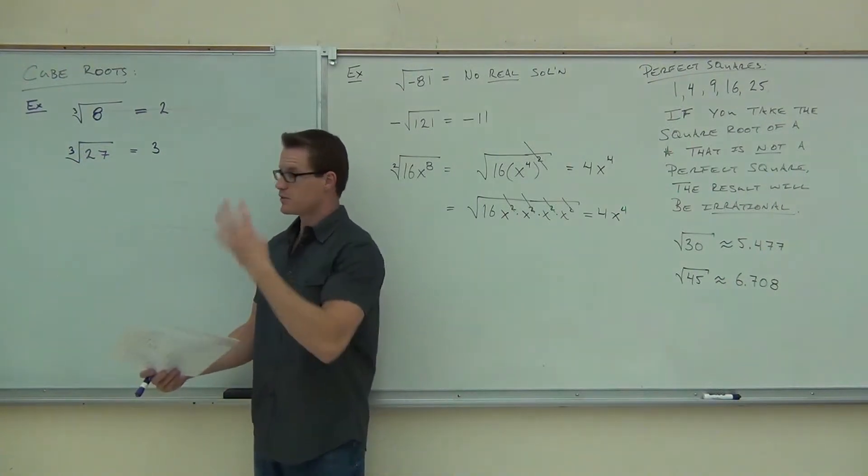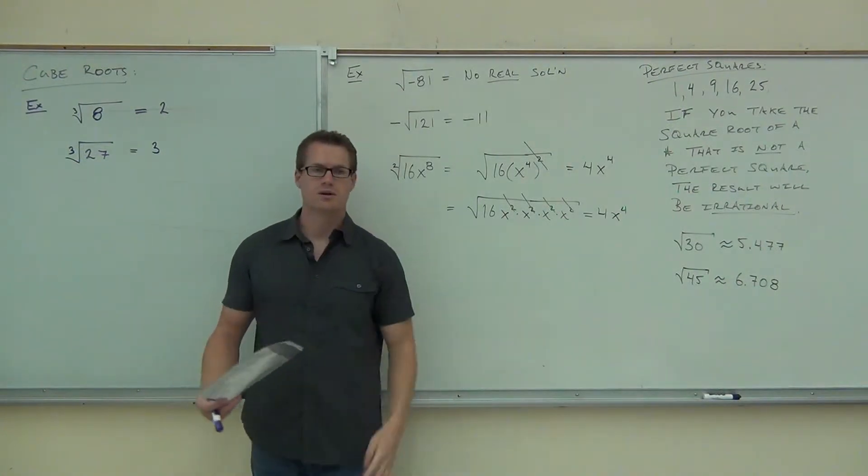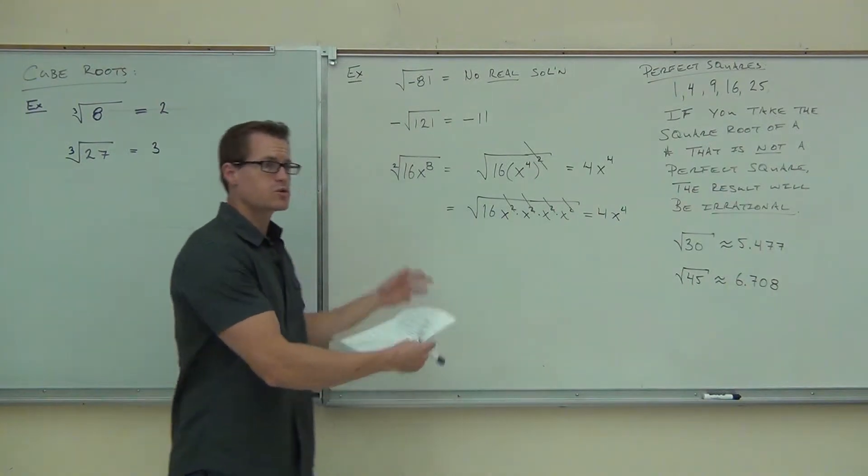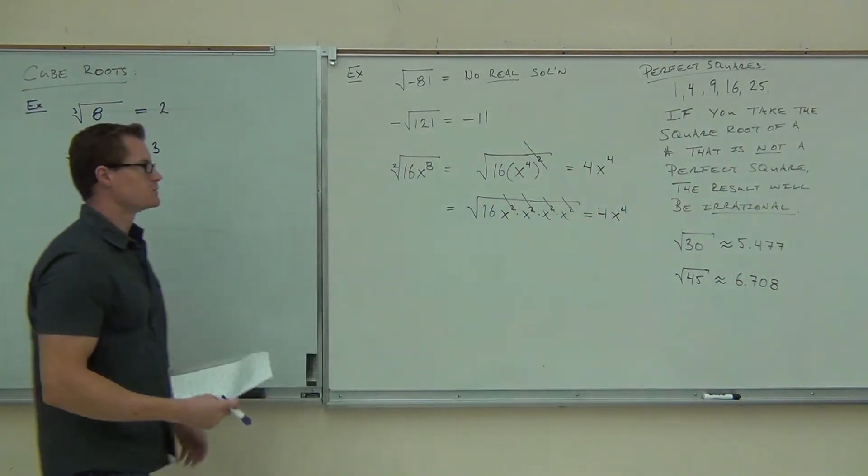There are also going to be fewer perfect fourths — numbers you can take to the fourth root and get a whole number — than there are perfect cubes or perfect squares.